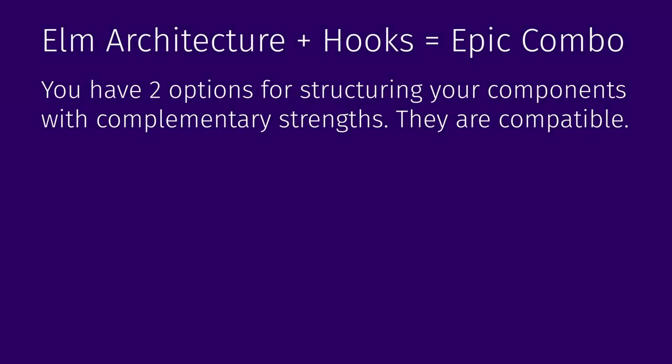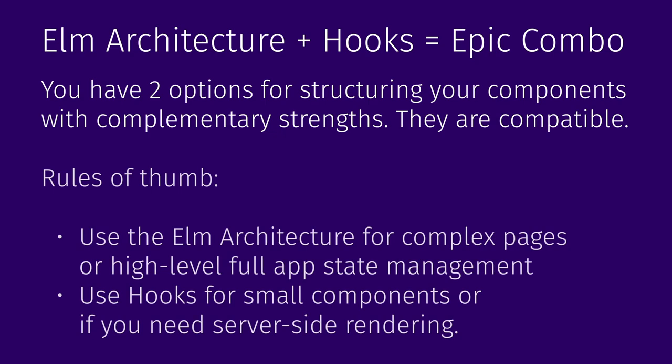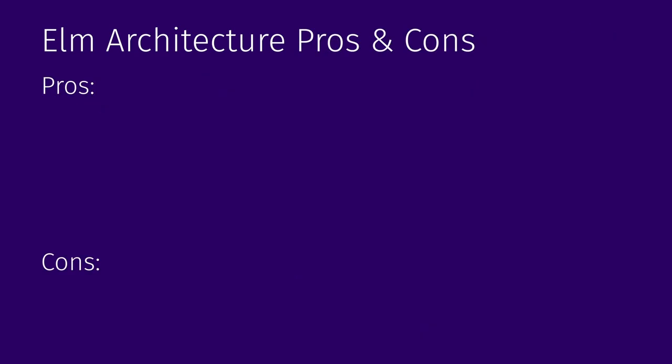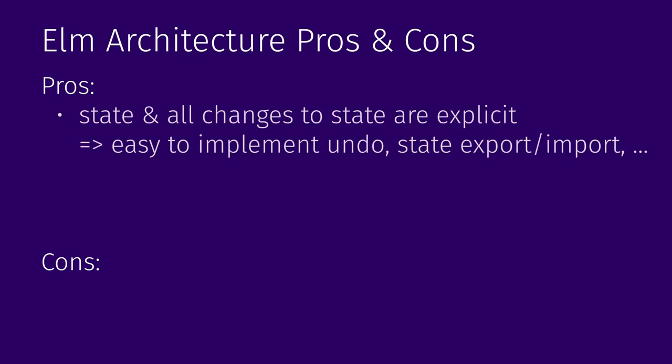The next part I really loved is the programming model. By providing both the Elm architecture and React-style hooks, Yew gives you the best of both worlds. A good rule of thumb is to go for the Elm architecture or struct components when working on whole-application state management or very complex pages, and use hooks for smaller components — especially visual ones like buttons where you just need to pass an onClick callback. The main pro of the Elm architecture is that state and all changes to state are explicit, so you can easily implement features like undo/redo or state export and import — like the JSON copy/paste in the demo.